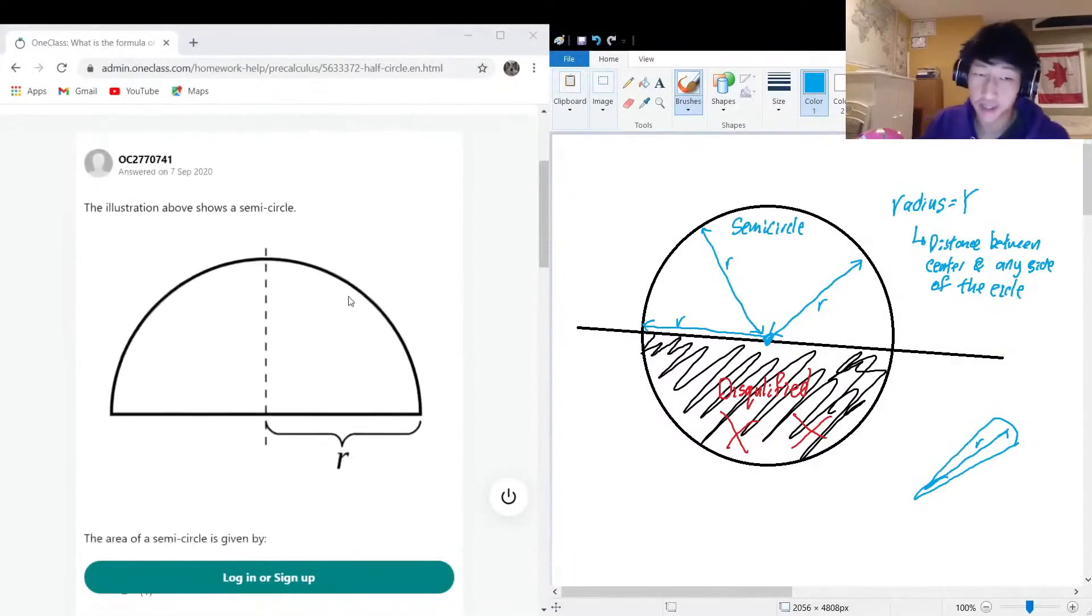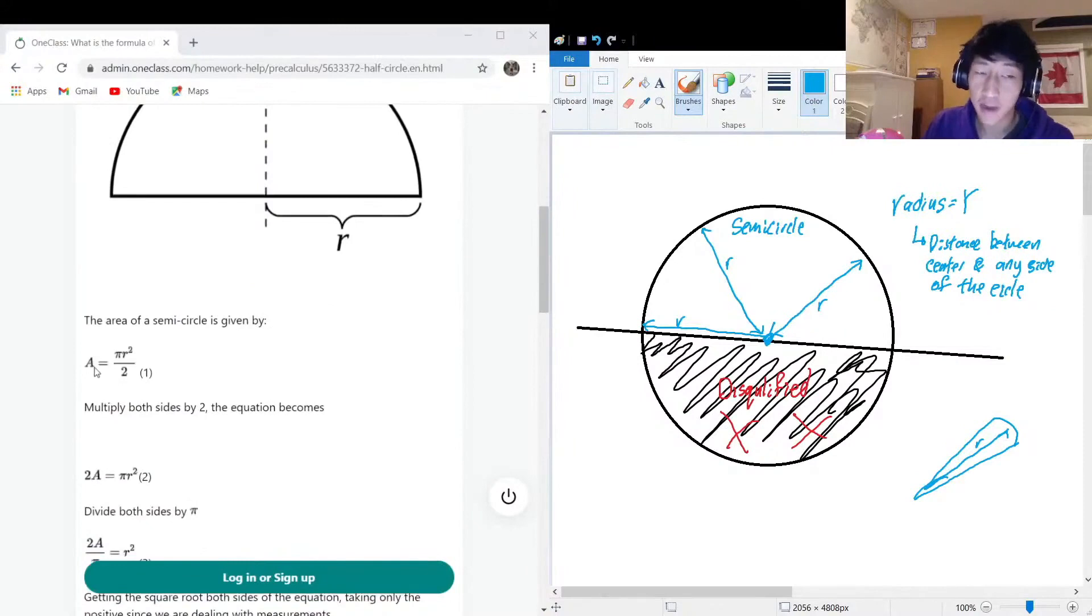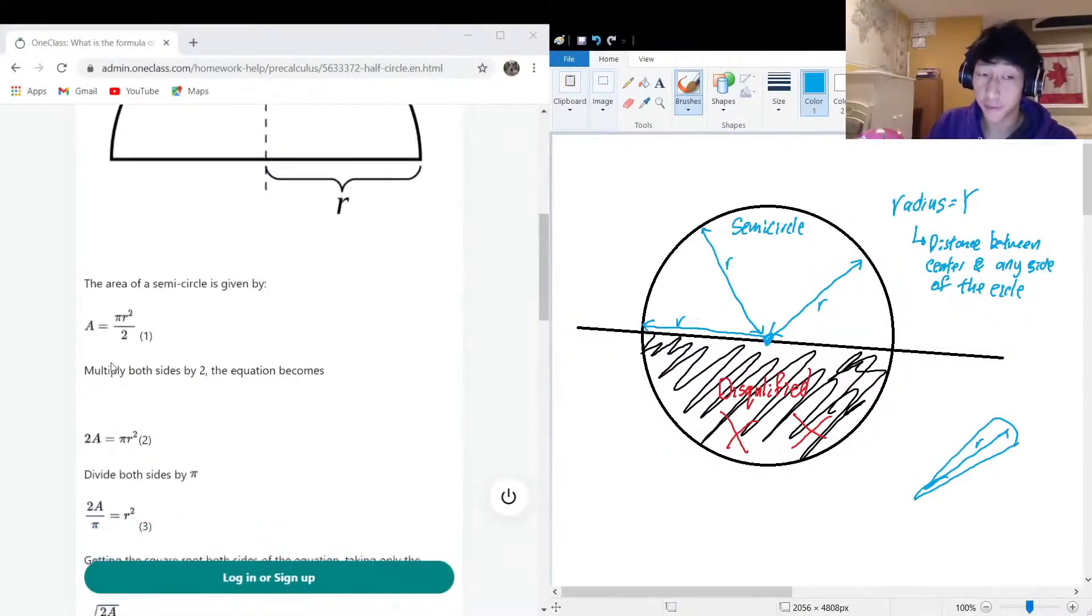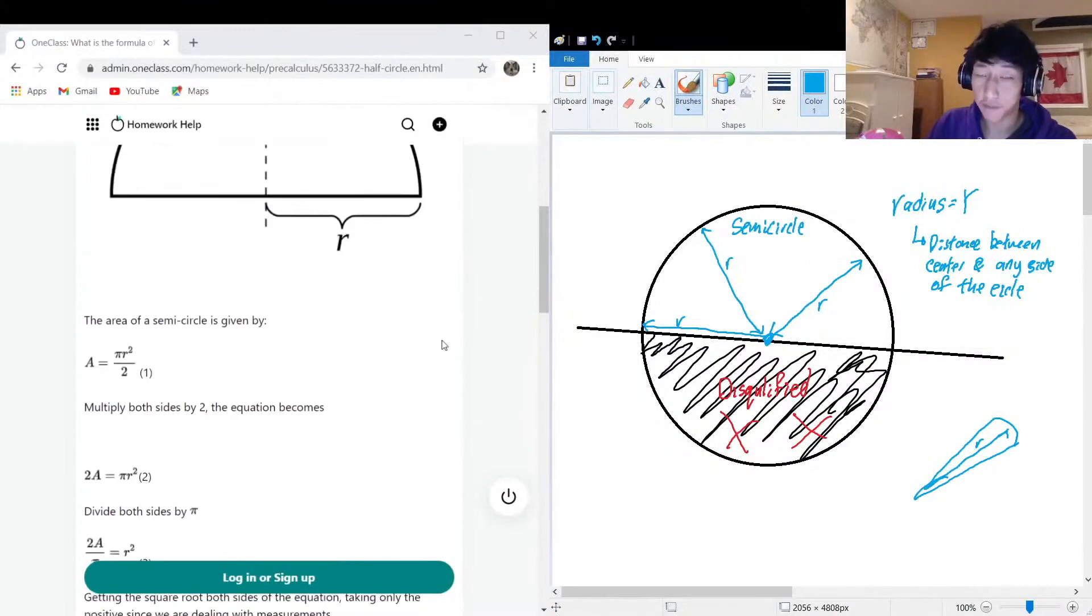Now, the radius of the semicircle—well, it also depends on if you're given information about the semicircle. Like if you're given the area, you could isolate for the radius as follows. So let's say we have area equals πr² divided by two. Divide by two because it's one half circle.